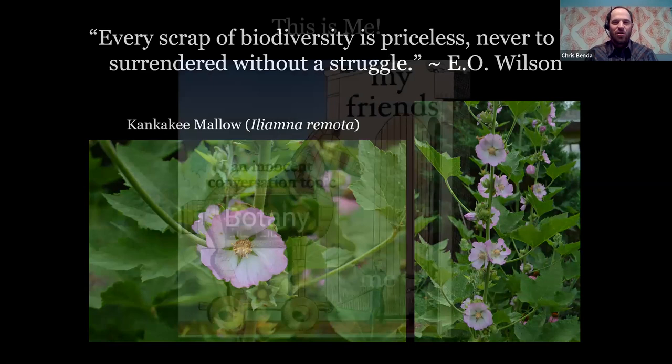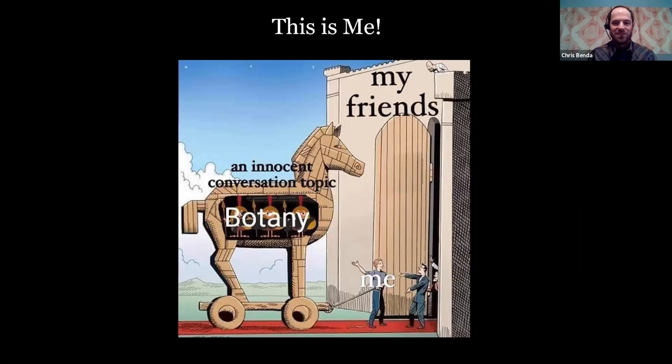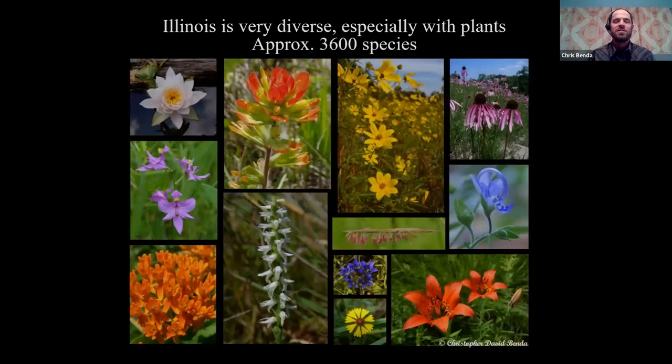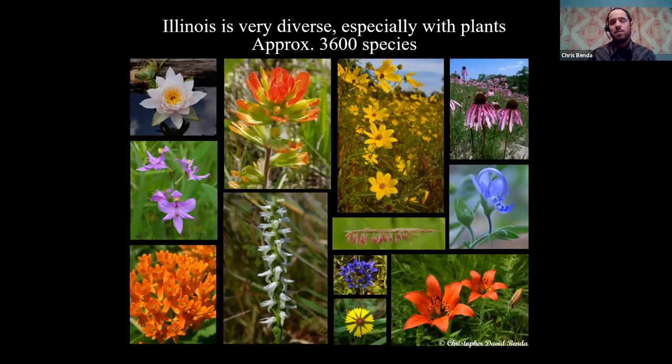Illinois is a pretty diverse state with about 3,600 species of plants total. It's a fairly long state north to south, which contributes to a lot of diversity. The northern part of Illinois is the southern edge of many northern-adapted species, and southern Illinois is the northern edge of many southern-adapted species — so the edge of range provides a lot of diversity. Illinois is also useful to consider in terms of glacial history: there are four major areas in the state that have never been glaciated.